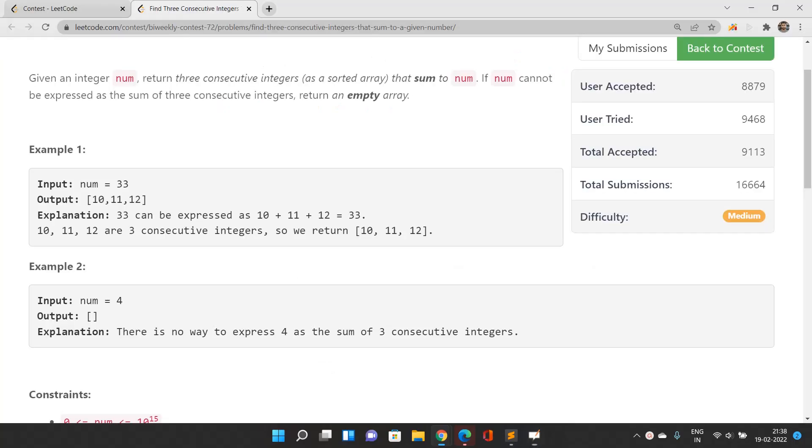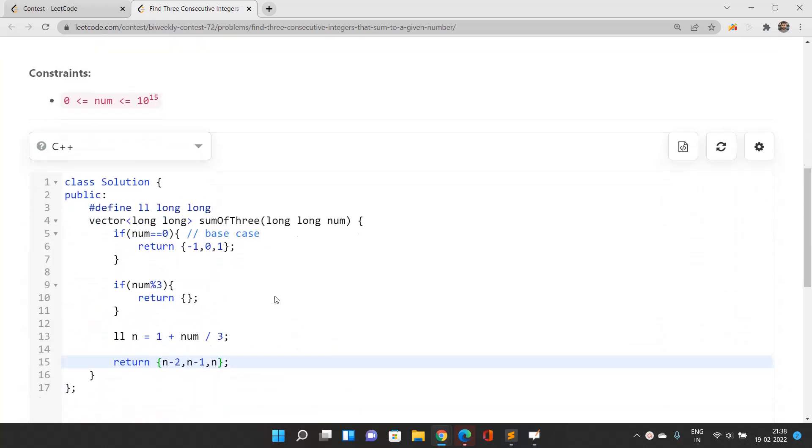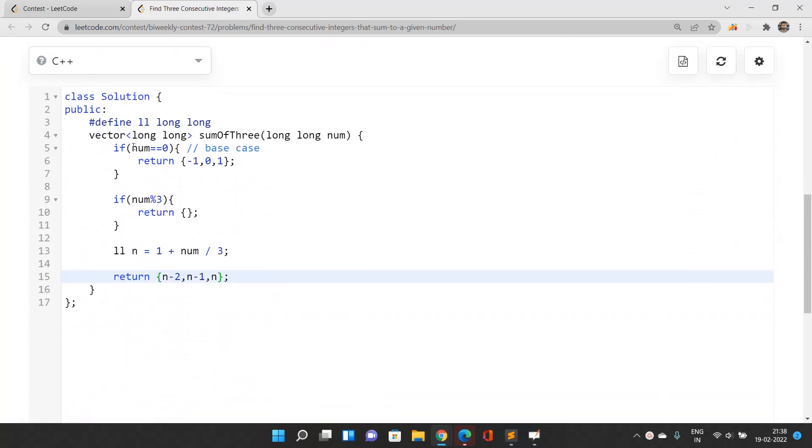Let's begin coding it out. If num is zero, let's write down the base case: [-1, 0, 1]. Otherwise, if num modulo 3, that is the remainder that we're going to get after divisibility by 3, if it is strictly positive, we need to return an empty array.